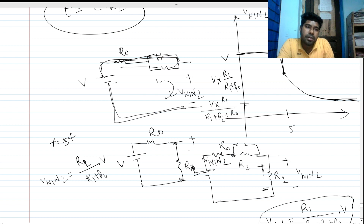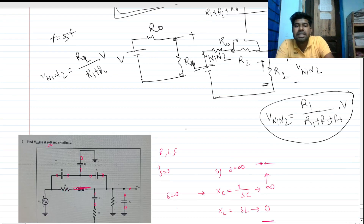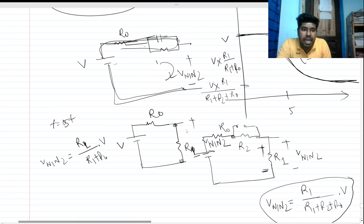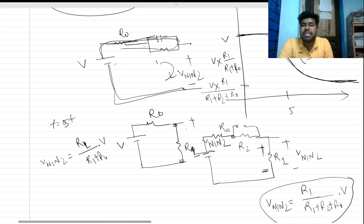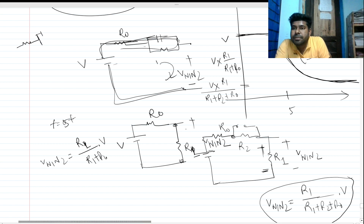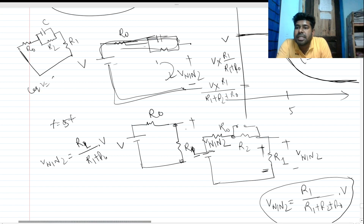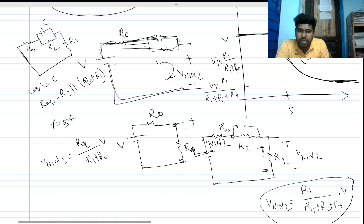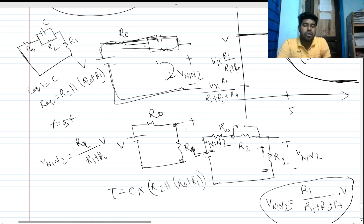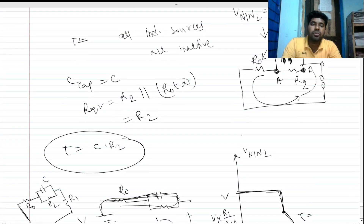The time constant is found at steady state by making all independent sources inactive. The circuit becomes: voltage source shorted, giving R_naught, C, R2, and R1. The equivalent capacitance is C. The equivalent resistance is R2 in parallel with (R_naught + R1). So the time constant is τ = C × (R2 ∥ (R0 + R1)).